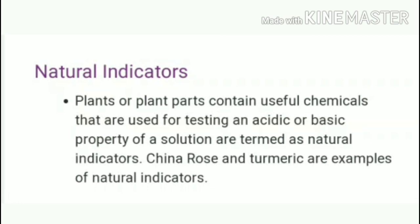Natural indicators — plants and plant parts contain useful chemicals that are used for testing the acidic or basic property of a solution. China rose and turmeric are examples of natural indicators. We obtain natural indicators from nature. For example, litmus paper is obtained from lichen. China rose, turmeric, and litmus are the three very important natural indicators.